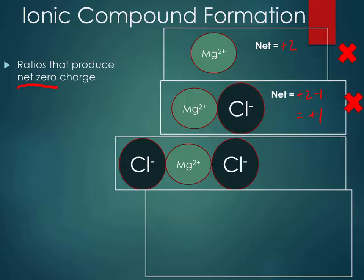So let's try again. Now I have magnesium two plus, and I brought in another chloride. So now for my net, I have my two plus from magnesium, and I have two one minuses from chlorine. So now I have a zero charge. Yay!